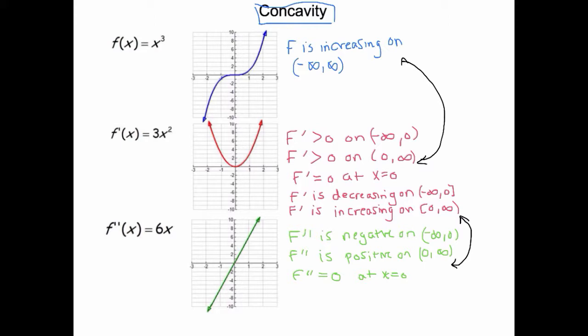All of that is telling us about the behavior of the derivative. So far I've analyzed a graph and its derivative twice. The big connection we want to make is: what is the second derivative telling us about our original graph? This is where you'll want to look at shape. For x cubed, the blue graph, it's increasing everywhere — but the shape is different to the left of x equals zero than it is to the right.